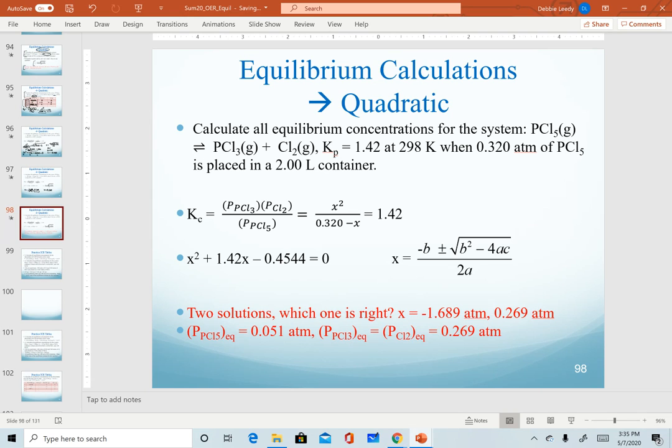And so when you go back to your ICE table to plug everything in, again, PCl5 is calculated as our original, our initial 0.320 minus our 0.269. Again, we're subtracting, so we're going by decimal places. And so that's how we get the 0.051 atmospheres.